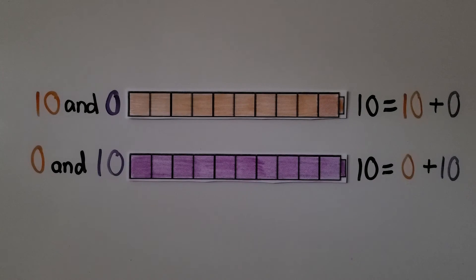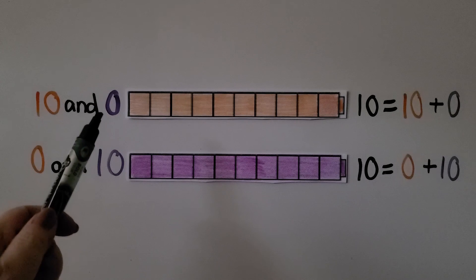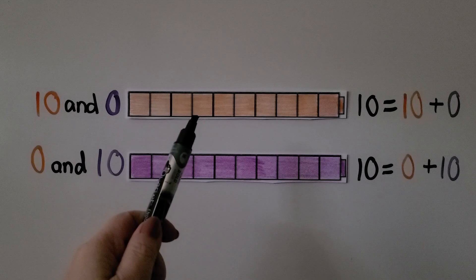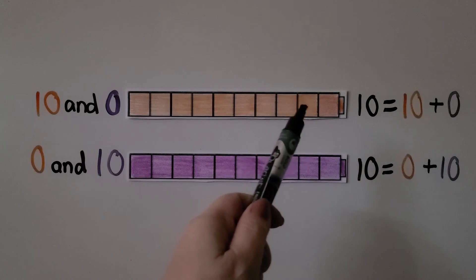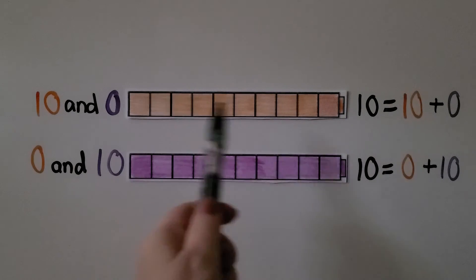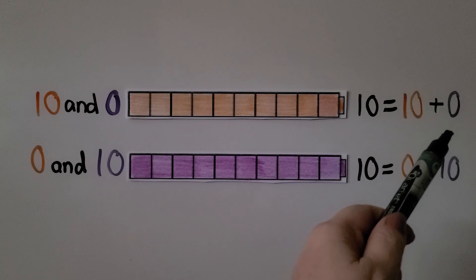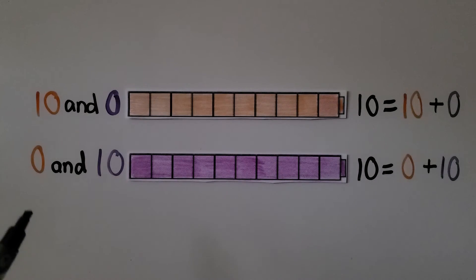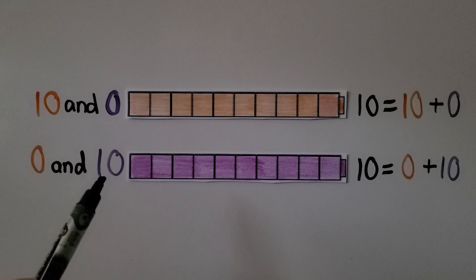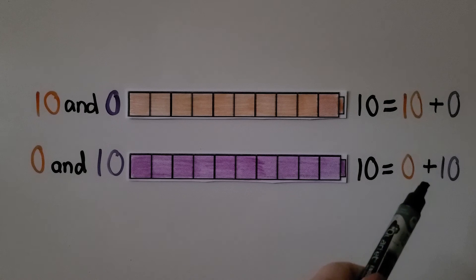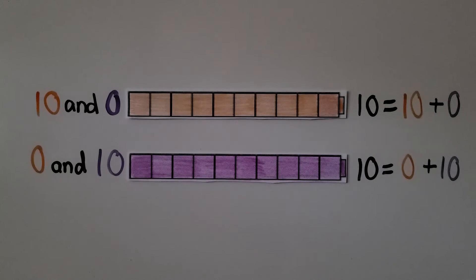We can show ten with the number pair ten and zero. We can have one, two, three, four, five, six, seven, eight, nine, ten orange cubes and zero purple cubes — ten is equal to ten plus zero. We could also have zero orange ones and ten purple ones, and say ten is equal to zero plus ten. So ten and zero is a number pair that equals ten when added together.